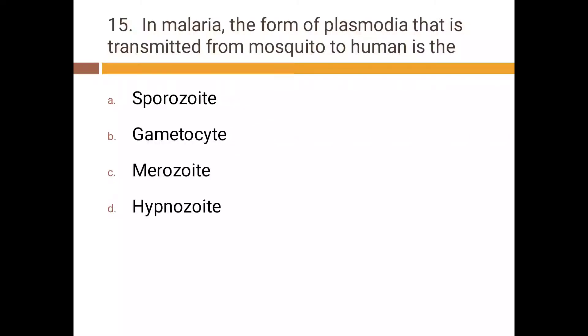In malaria, the form of Plasmodium that is transmitted from mosquito to human is: a) sporozoite, b) gametocyte, c) merozoite, d) hypnozoite. Correct answer is a) sporozoite.